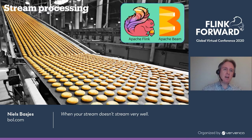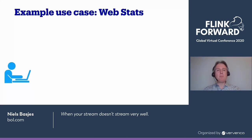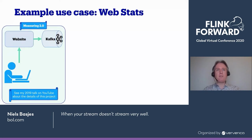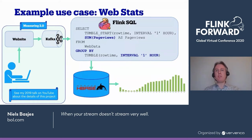The things I'm talking about today apply to both of these systems. To simplify it, I have chosen a very simple use case that many of you will relate to: making some web statistics. We have a user who visits our website and we produce measurements into Kafka. We just assume we have measurements arriving. We have a very simple Flink SQL statement that essentially counts the number of page views per hour, and we want to stream that into HBase so we can put a dashboard with a nice graph on it.